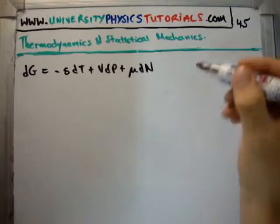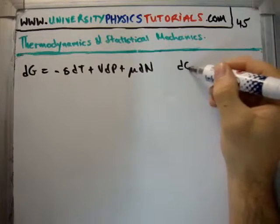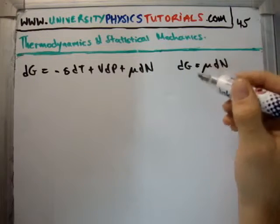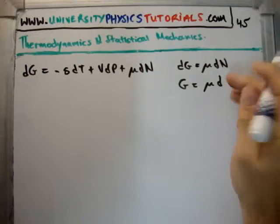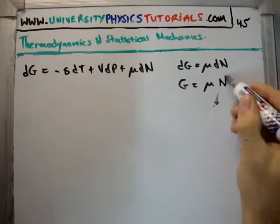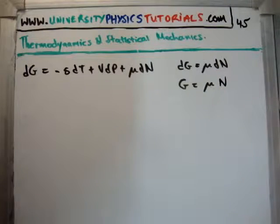We saw in a previous video that dG can also be written as μ times dN, or if we integrate this, we get the Gibbs free energy per particle is equal to the chemical potential μ.